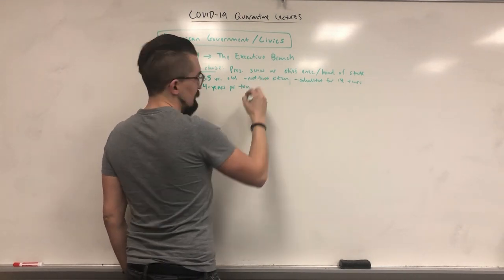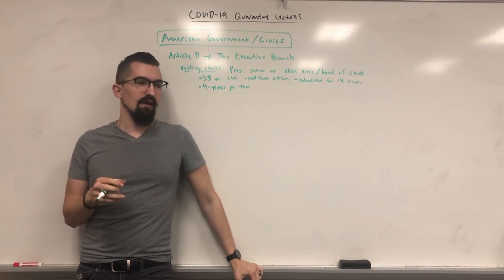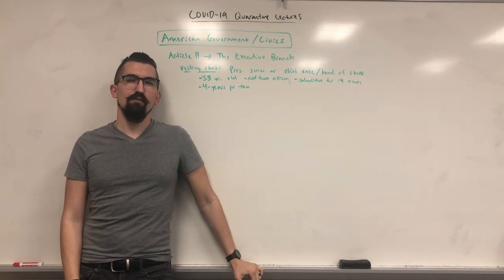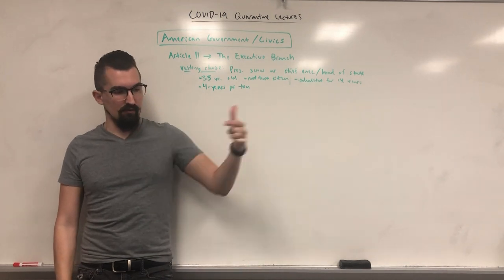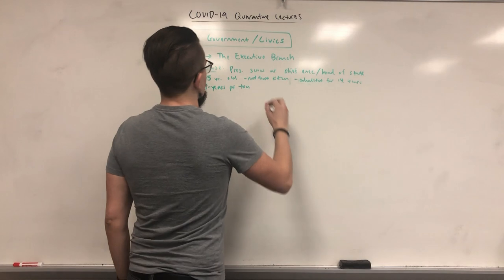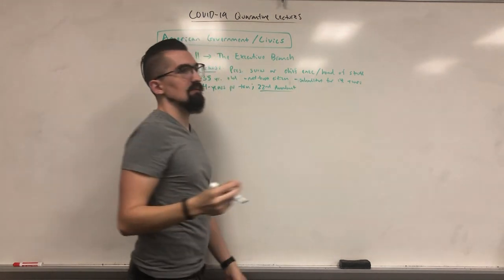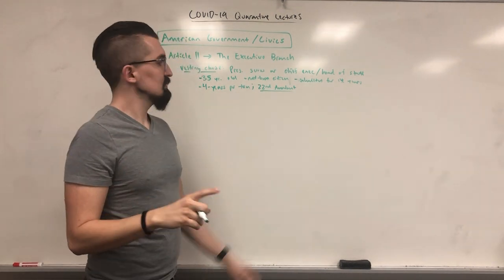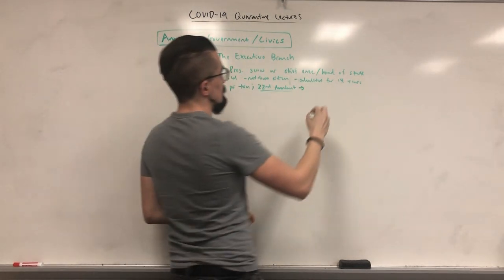Since the presidency of Franklin Delano Roosevelt in the 30s and 40s, who ran four consecutive terms, they realized that having a president win election after election isn't that much different from having a type of monarch. Afterwards, they passed the 22nd Amendment, which caps the amount of times you can become president at two terms.